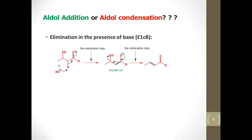This was the product obtained from the base-catalyzed aldol addition reaction. The alpha proton in this product is much more acidic because there is a carbonyl group — which is electron-withdrawing — and a hydroxyl group also attached, which is electron-withdrawing by inductive effect. Both pull electron density from this carbon, making this proton more acidic. So hydroxide attacks and we get another enolate.